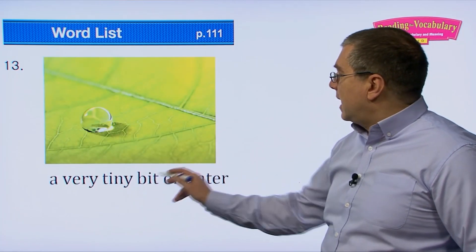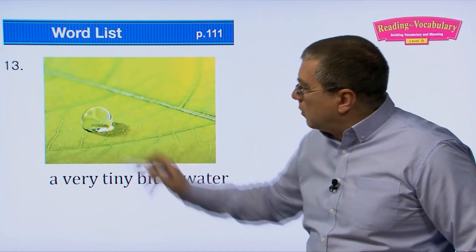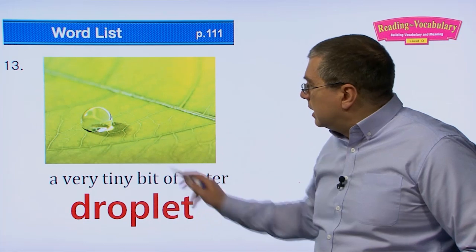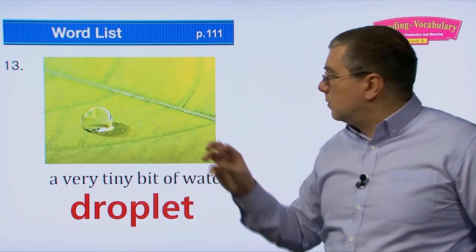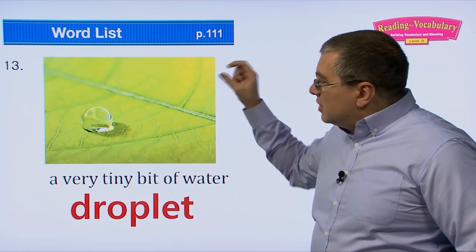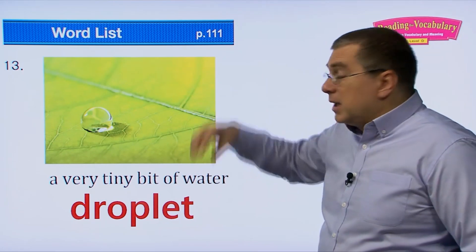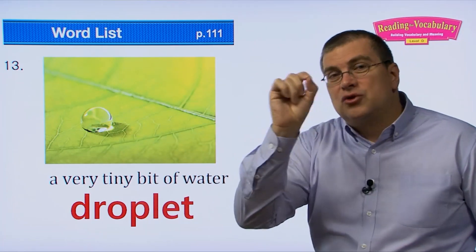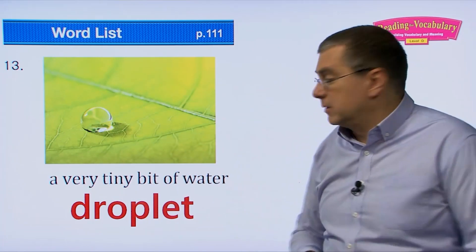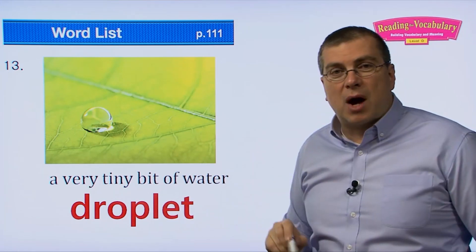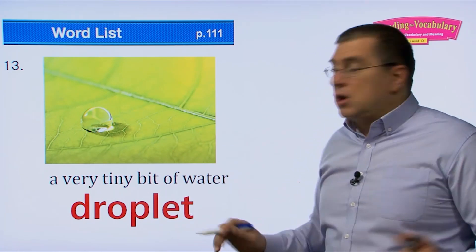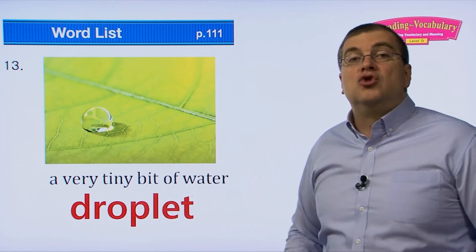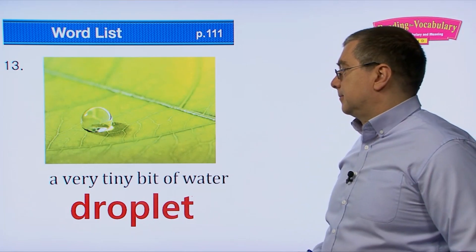Number thirteen: a very tiny bit of water — a droplet. It's like a little ball of water. When it rains lightly, water collects in little drops — we call them droplets. There's one droplet, two droplets. You can also just say 'a drop of water,' but sometimes people say droplet.